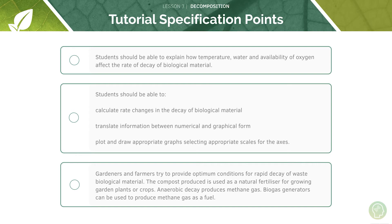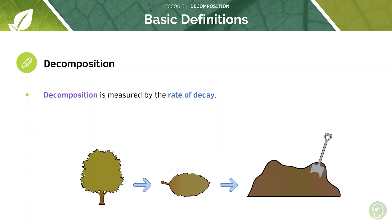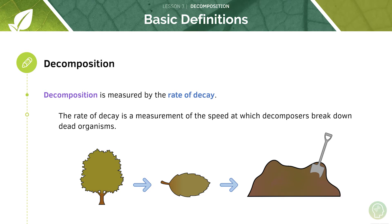These are your specification points — come back to them at the end, make sure you understand everything, and if you don't just rewind to that point in the video and give it another go. Decomposition is measured by the rate of decay, and the rate of decay itself is a measurement of the speed at which decomposers break down dead organisms.